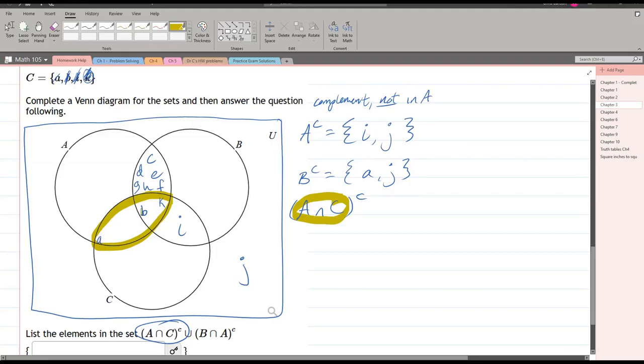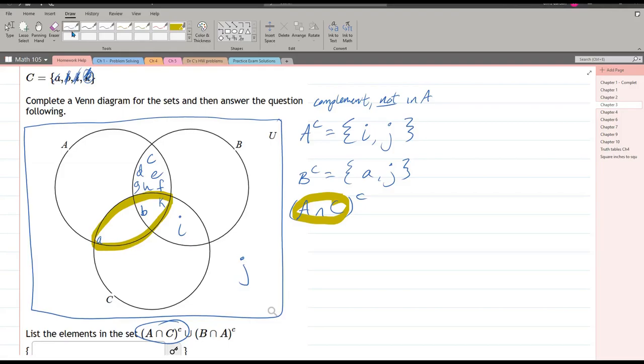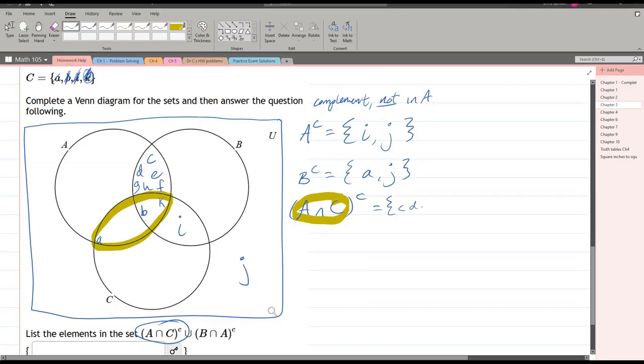But we're now going to take the complement of that. So now we have A intersect C. I want everything not inside of that. There's a lot not inside of that. In fact, the only things inside are A, B, and K. So everything outside of it is quite a bit. So don't use A, don't use B. We have C, D, E, F, G, H, I, J, and not K. And that's the last letter. You should put commas in between these. I'm just going to save some time and not write commas. All right. So that is A intersect C complement.